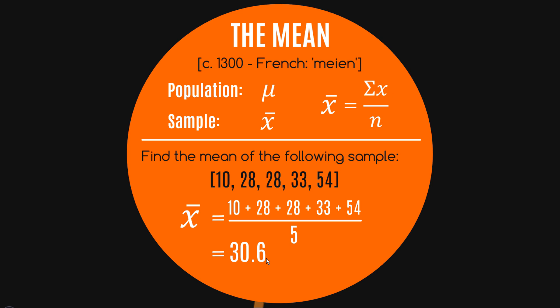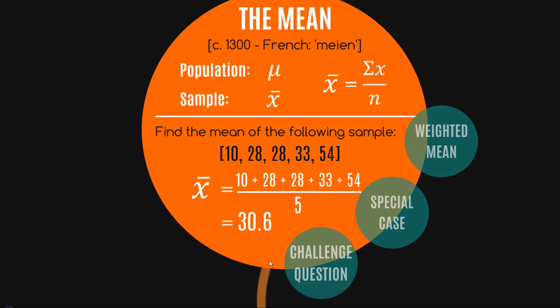As a convention, you often provide the mean to one more decimal place than the original data set was given in. Here, because the original data set was given to no decimal places, I'm providing the mean to one decimal place. That's just a convention, but it's followed by most textbooks, journals, and statistical thinkers alike — so good to start getting into some nice statistical habits.